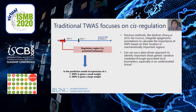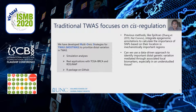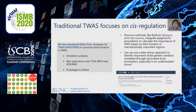So we set out to build on these lessons to use a data-driven approach to identify important distal genetic variants that are mediated through associated local biomarkers for incorporation into TWAS. We developed MOSTWAS, or Multiomic Strategies for TWAS. Today I'm going to present results from simulations and real data applications in TCGA breast cancer and ROSMAP brain tissue multiomic data. The software for MOSTWAS is available as an R package on GitHub.